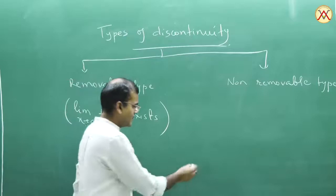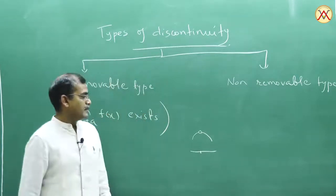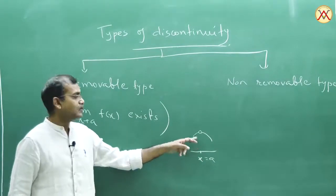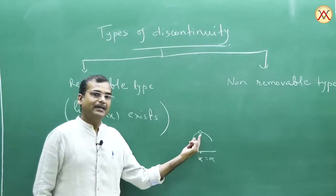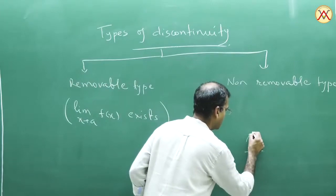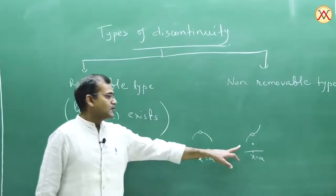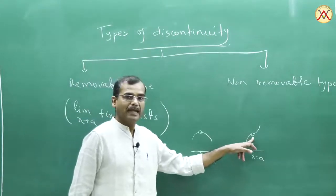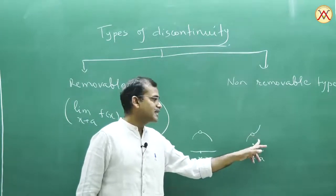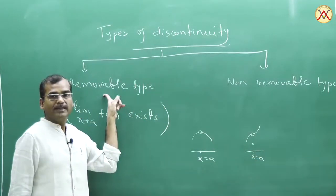You can easily identify: consider a function where the limit exists at x = a, but f(a) is not defined. So function is discontinuous at a, because the condition limit = f(a) fails. Similarly, in another case, limit of function exists at a, but f(a) is defined yet not equal to the limit at a - so function again becomes discontinuous at a. Such cases come under removable type discontinuity.